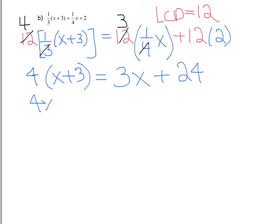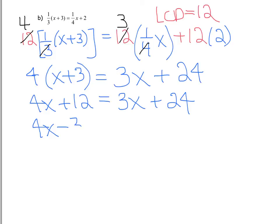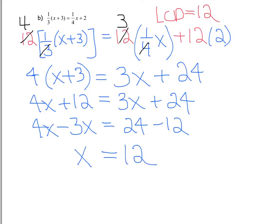Now all the fractions are gone and we solve as before. Expand the brackets: 4x plus 12 equals 3x plus 24. Put all x terms on the left and number terms on the right: subtract 3x from the left and subtract 12 from the right. 4x minus 3x gives 1x, and 24 minus 12 gives 12, so x equals 12. We're going to practice this again tomorrow — fraction equations test whether you can do all the equation types we've covered.